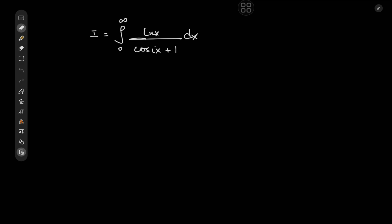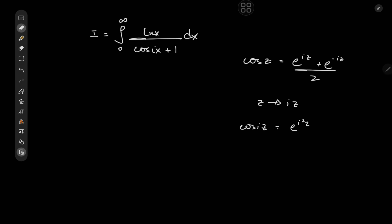But why is there an i in the cosine function? Well, the way we define the cosine function in complex analysis is cosine z equal to e to the iz plus e to the negative iz over 2. And if we transform from z to i times z, we get cosine(iz) equal to e to the i²z plus e to the negative i²z over 2, which gives us e to the negative z plus e to the z over 2, which is the hyperbolic cosine, or cosh of z.